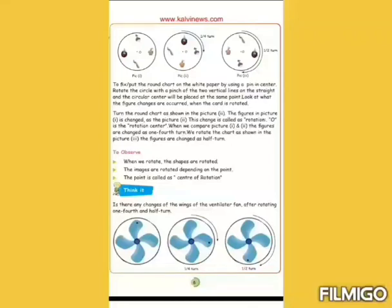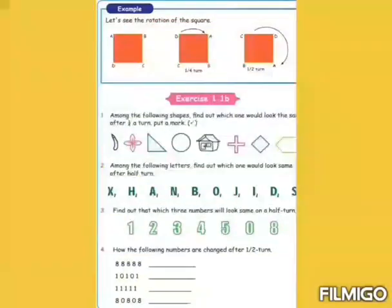Now, we see example. Let's see the rotation of square. Square has 4 sides, 4 corners. In the 4 corners are marked A, B, C and D. In the second square, rotate 1 by 4th turn. Now, the corners A, B, C and D are changed. At last square, changed again 1 by 4th turn. So, totally half turn.